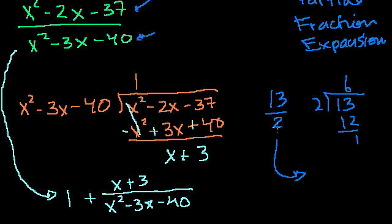So if you wanted to rewrite this, it would be the number of times the denominator goes into the numerator, that's 6, plus the remainder over the denominator, plus 1 over 2. And when you did it in elementary school, you would just write 6 and 1/2, but 6 and 1/2 is the same thing as 6 plus 1/2. And that's exactly the same thing we did here. The denominator went into the numerator one time, and then there was a remainder of x plus 3 left over.